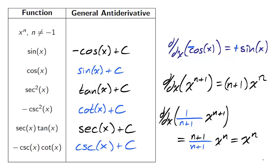Therefore, we can calculate the derivative of 1 over n plus 1 times x to the n plus 1, and find that it's x to the n. So we can reverse the power rule for the function x to the n when n is not equal to negative 1.